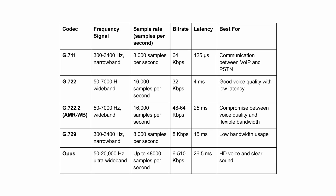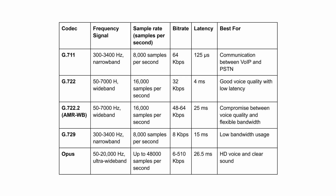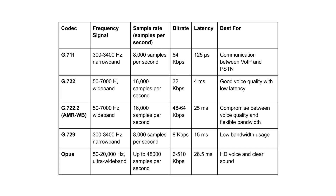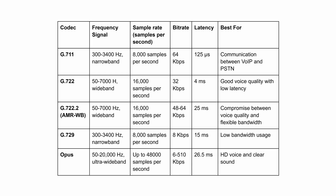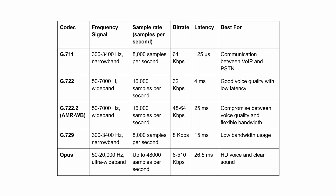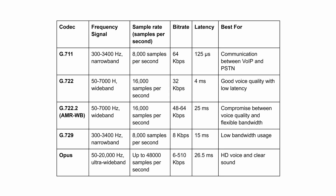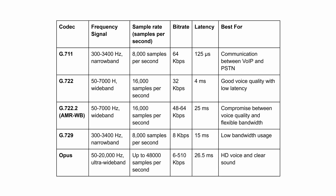And finally, Opus, which is an ultra-wideband codec. Opus supports 50 to 20,000 hertz along with a remarkably high sample rate. This codec is also flexible, with a bit rate ranging from 6 to 510 kilobits per second and a bandwidth that adapts to network availability.